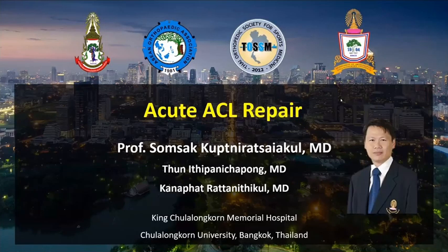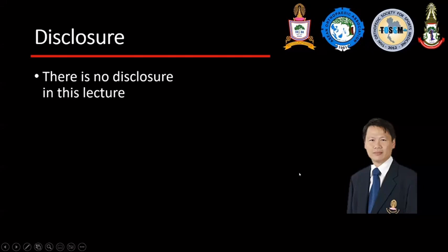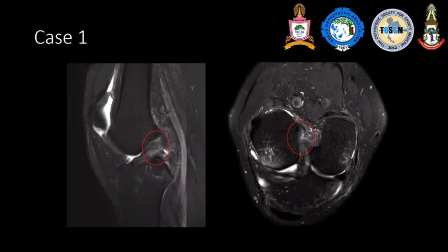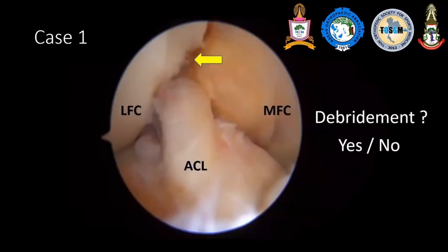How to do the ACL repair is the topic today. In this case, it's quite common for people with a knee injury that is twisted. And if we have an MRI like this showing ACL rupture with bone bruise, most of us would have agreement to do the ACL reconstruction for this case.